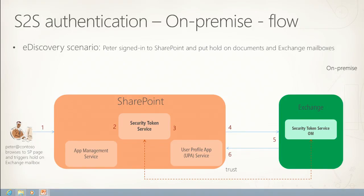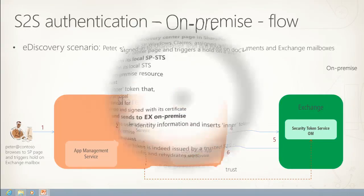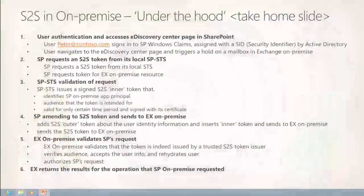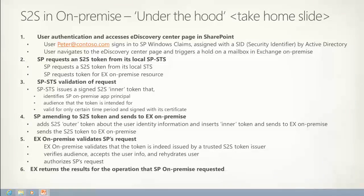For multiple-hop scenarios — once the call has arrived on the SharePoint side and you want to call someone else with the same information — if the other app accepts S2S tokens, you can build an S2S token and give it to that app. Or you can use the typical WCF model because the user identity is already rehydrated as if the user is signed in, so the rest of the pipeline works the same way as today.